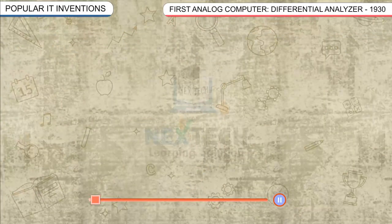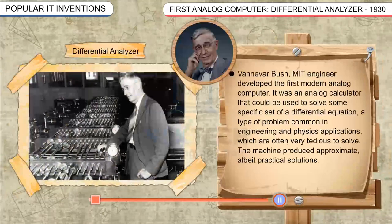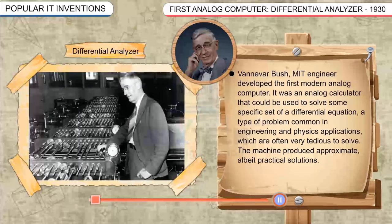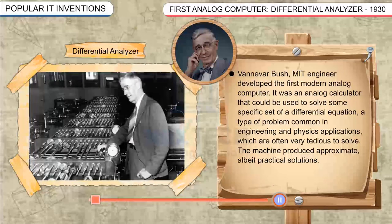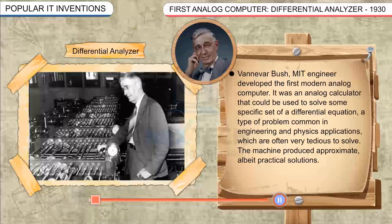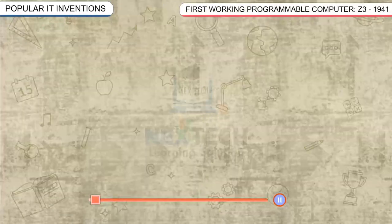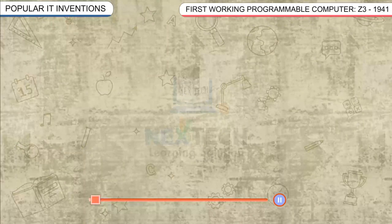First Analog Computer — Differential Analyzer. Vannevar Bush, an MIT engineer, developed the first modern analog computer. It was an analog calculator that could be used to solve a specific set of differential equations, a type of problem common in engineering and physics applications, which are often very tedious to solve. The machine produced approximate, albeit practical, solutions.